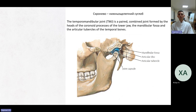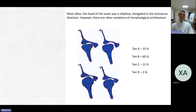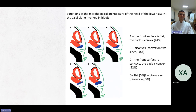Two words about the temporomandibular joint (TMJ). It is a paired combined joint formed by the head of the condylar processes of the lower jaw, the mandibular fossa, and the articular tubercles of the temporal bones. Most often the head of the lower jaw is elliptical, elongated in the transverse direction; however, there are other variations of morphological architecture. Type A is 25%, type B is the most frequent at 60%, type C is 12%, and type D is only 3%.